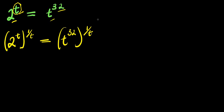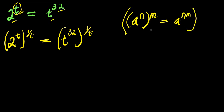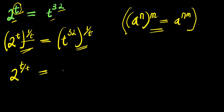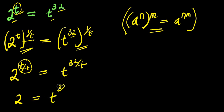So we then apply this index law: if you have a to the power of n, and this is raised to the power of m, this equals a to the power of n times m. We multiply t times 1 over t, giving us 2 to the power of t divided by t. Now t divided by t is 1, so we have 2 to the power of 1, which is simply 2. And this equals t to the power of 32 divided by t.